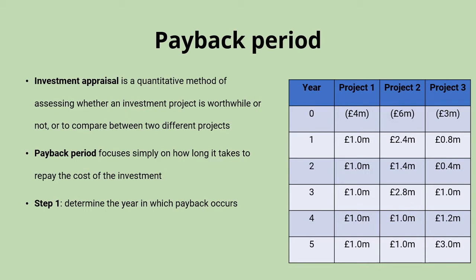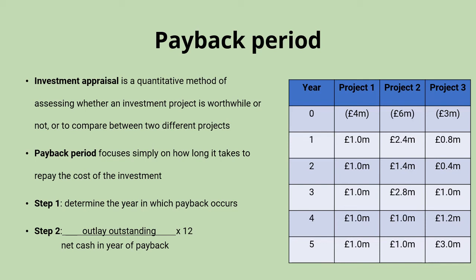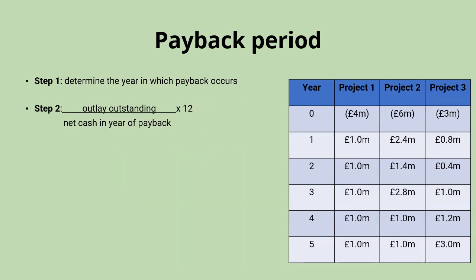That first step won't be enough on its own — we need to work out how far through that year payback occurs, because a year is quite a long time and it's not accurate enough just to say the investment cost will be paid off at some point during the third year, for example. So we have a second step with the formula: outlay outstanding divided by net cash in the year of payback, multiplied by 12. The outlay outstanding is how much of the initial cost is still to be repaid when we reach the year of payback. The net cash is the expected cash return in that year — we say net cash because some investments might have running costs to be taken away from cash inflows. We multiply that ratio by 12 to work out the number of months through that year that payback happens.